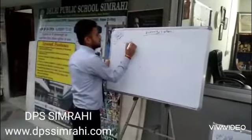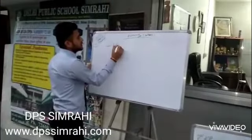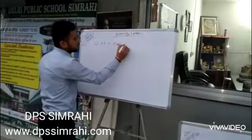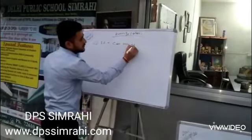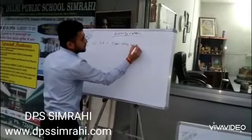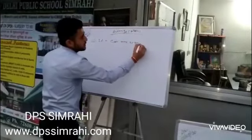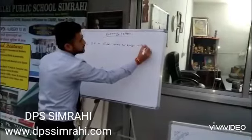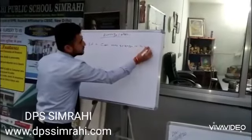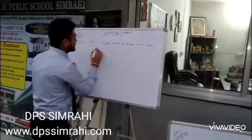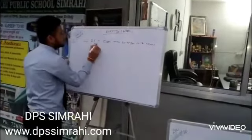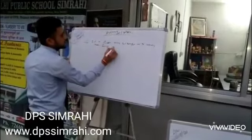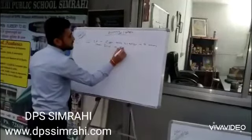Number one question: If a car runs 35 kilometers in seven hours, then find its average speed.